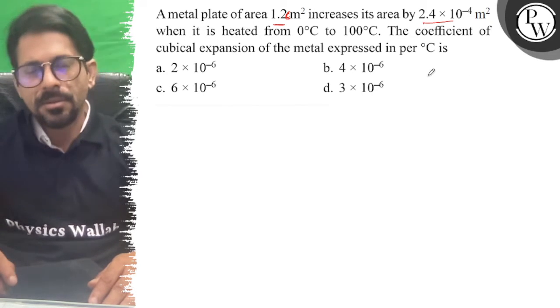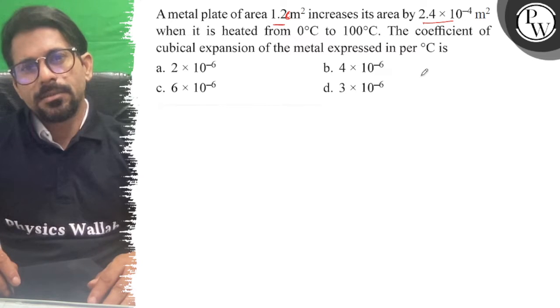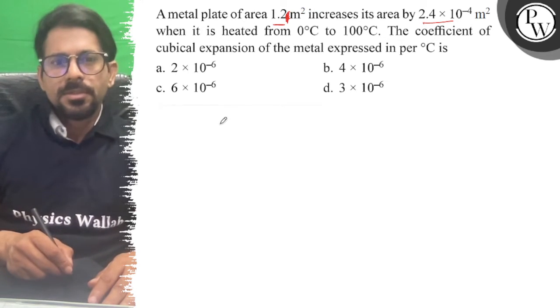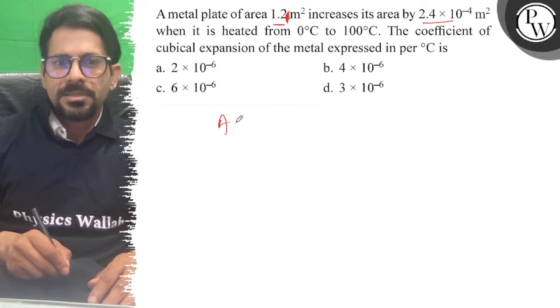We have the formula. Basically, this is area in meter square. So area equals A₀ times (1 + β·ΔT).